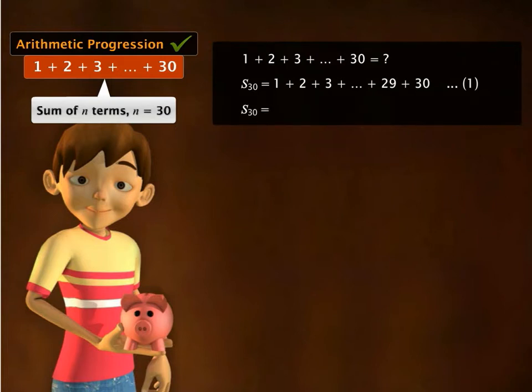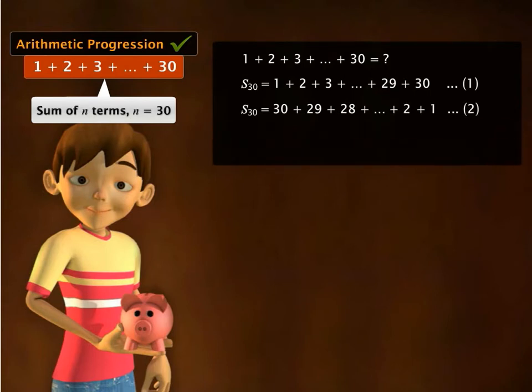Next, we can also write the sum as 30 plus 29 plus 28 and so on plus 2 plus 1. Adding equations 1 and 2, on the left hand side we get 2 times s 30.